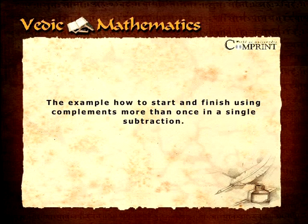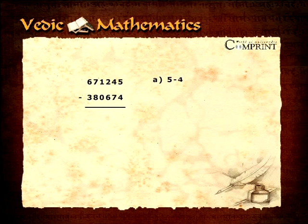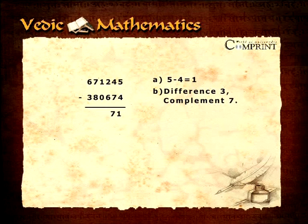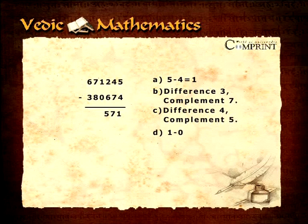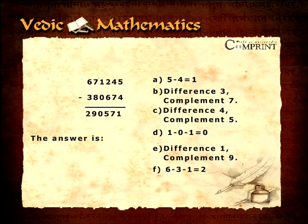Let's take an example to illustrate how to start and finish using complements more than once in a single subtraction: 671,245 minus 380,674. It gives 5 minus 4 equals 1, the difference being 3 and complement being 7, and also the difference being 4 and complement being 5. 1 minus 0 minus 1 equals 0, difference 1 and complement 9. 6 minus 3 minus 1 equals 2. The final answer is 290,571.